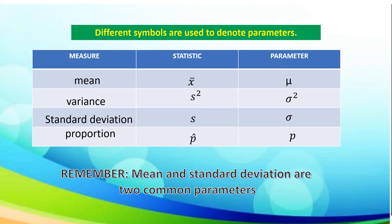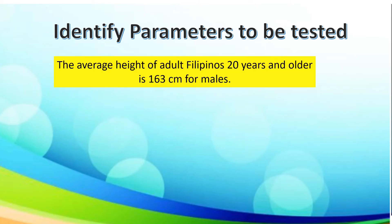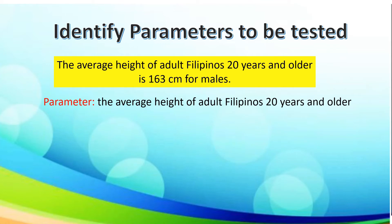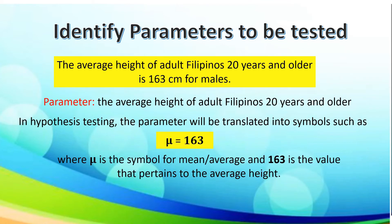Remember, mean and standard deviation are two common parameters. Now let us identify parameters to be tested. Given this statement: the average height of adult Filipinos 20 years and older is 163 cm for males. The parameter in the given is the average height of adult Filipinos 20 years and older. Here, we are referring to the population. In hypothesis testing, the parameter will be translated into symbols such as mu is equal to 163, where mu is the symbol for mean or average, and 163 is the value that pertains to the average height.